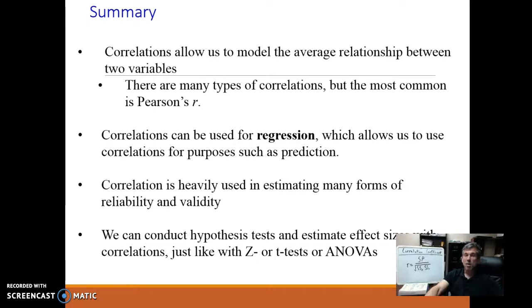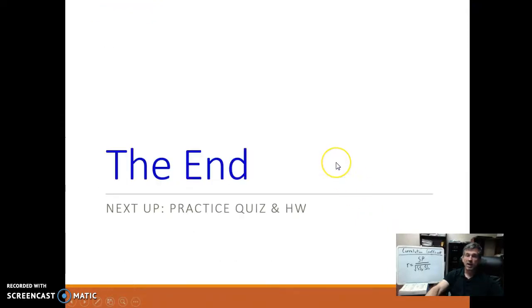All right. To wrap things up, again, we're modeling the average relationship between two variables. Pearson's R requires at least interval scales, but that's a pretty safe bet. What we're going to learn in the next module is how to use them for regression, to make predictions. We've also learned about how to conduct hypothesis tests and estimate effect sizes, just like with our other hypothesis tests. All right. That is the end of our module, which is good because I'm losing my voice a little bit here. So we're going to wrap things up. Do your practice quiz. Do your homeworks. And then come back for the 13th and final module of the course, Regression and Prediction. See you.